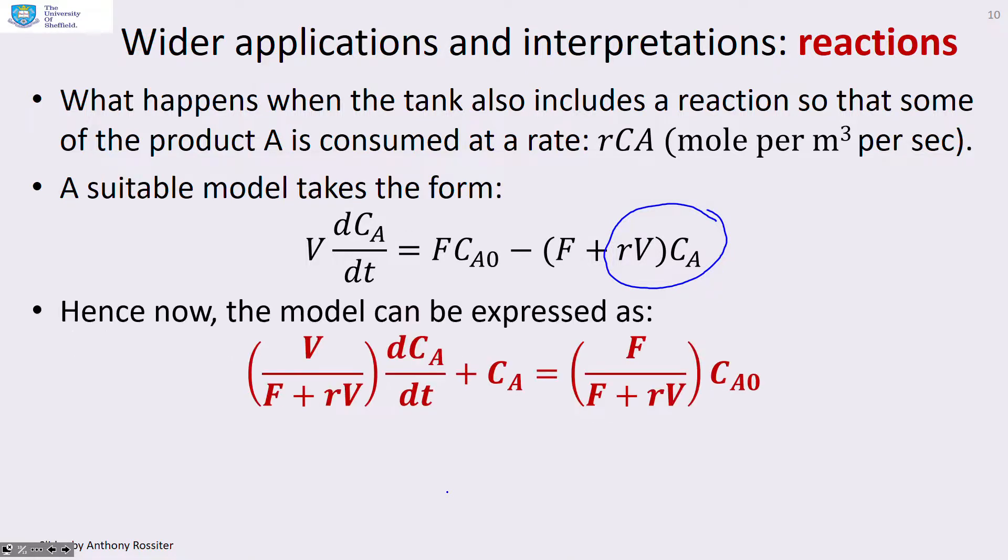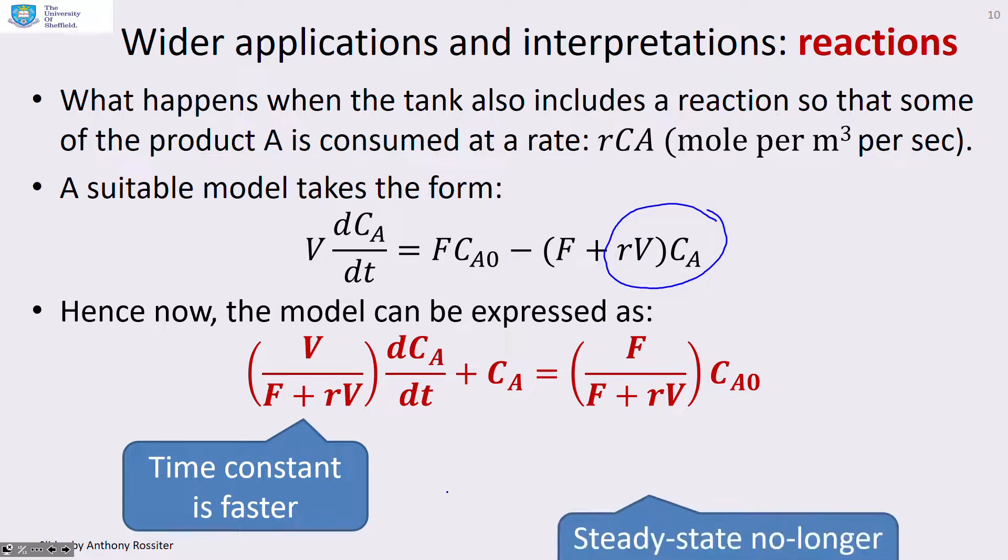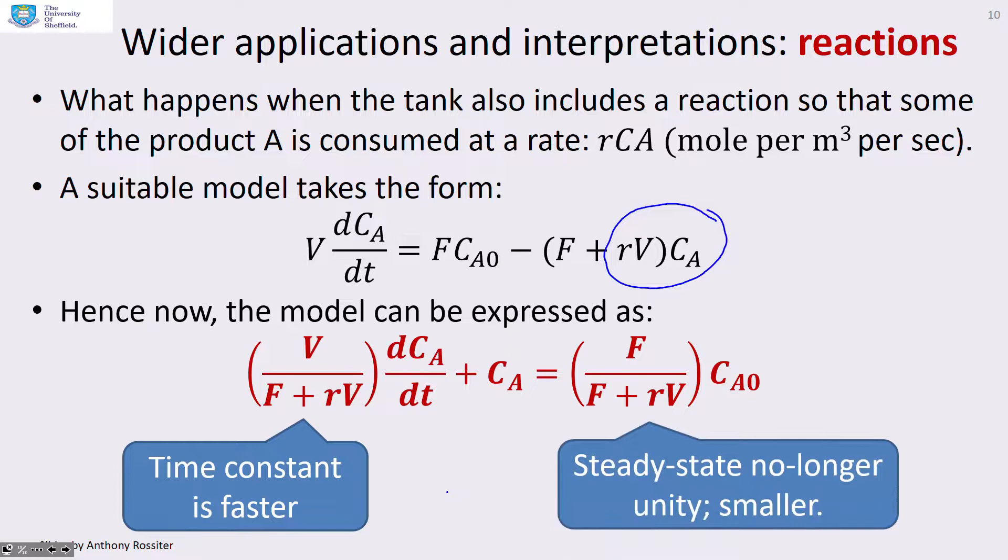So that's going to reduce to a model a bit like this. You can see the time constant is now faster because instead of V over F, I've got V over (F plus RV). And ditto, the steady state is smaller because instead of a steady state of one, I've got F over (F plus RV). So again, let's go back to this app and see, is that what we expect?